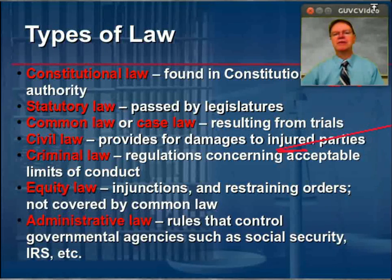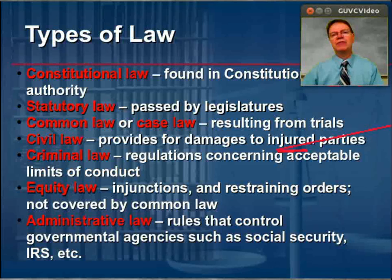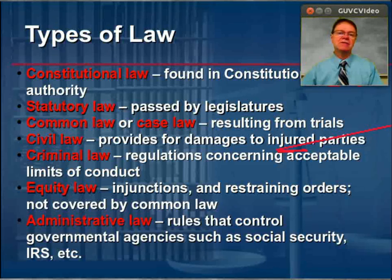Finally, there's administrative law. These are rules that control governmental agencies such as the Social Security Administration and the Internal Revenue Service. For example, if a friend became disabled and applied for Social Security benefits and was denied that claim, this court gives the opportunity for that claim to be appealed before an administrative law judge, who will interpret the policies of the Social Security Administration to see that those laws were accurately applied in the applicant's case. In some cases, those applications for benefits may be approved.